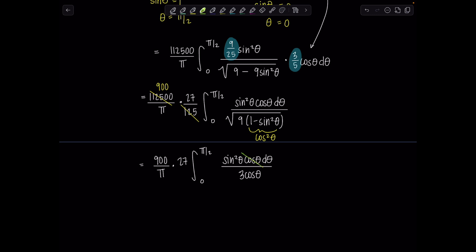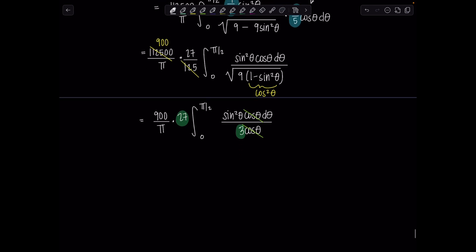This 3 will cancel with 27 and just give me a 9. So we've got 9 times 900. So we've got 8,100 over pi times the integral from 0 to pi over 2, sine squared theta, d theta. The worst is most certainly over.